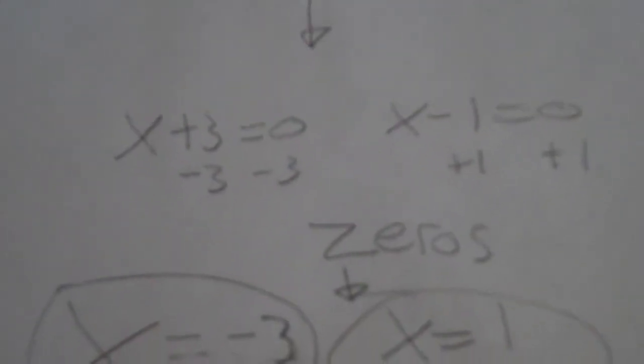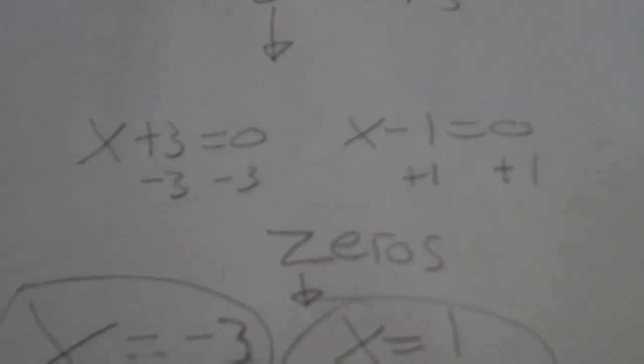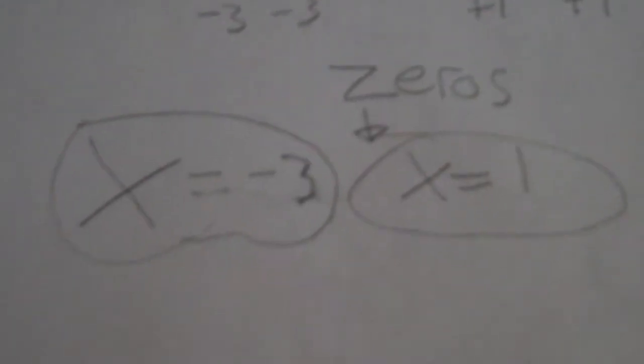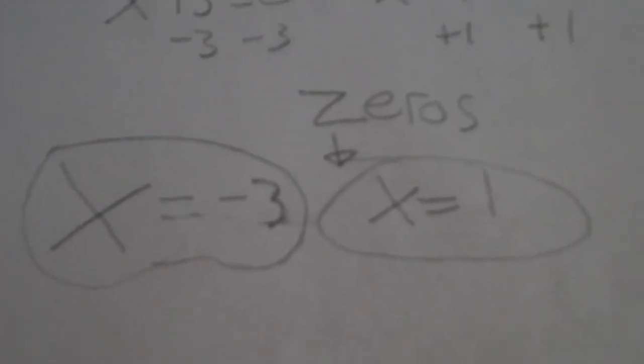The next thing you want to do is set each factor equal to 0, which I did here by setting x plus 3 and x minus 1 equal to 0. The result of doing this will be finding your zeros on your parabola, which are x equals negative 3 and x equals 1.